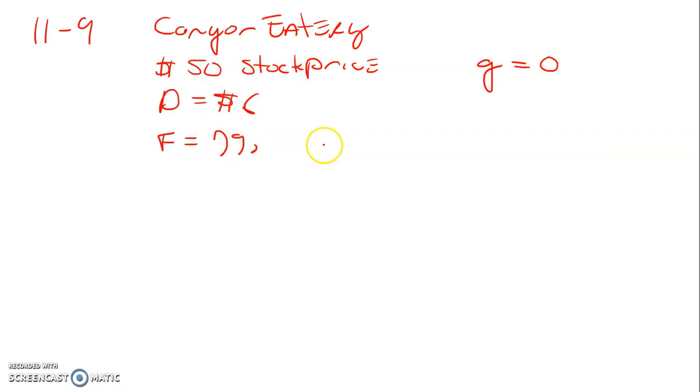And I believe that's all the information. So A is cost of retained earnings. That's Rs.